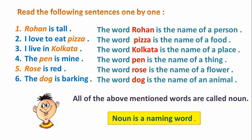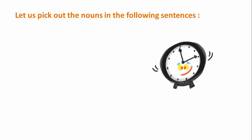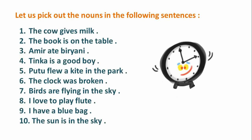Anything in this world or outside the world that we know has a name, so all of these words are names — they are nouns. Now let us pick out the nouns in the following sentences. There are 10 sentences here; pick out the nouns from each of the sentences.